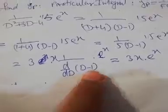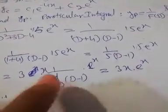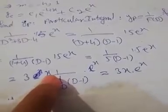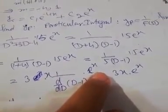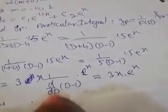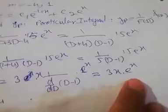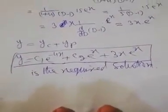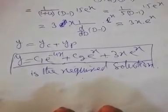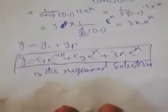Using the formula: x times 1/[d/dD(D - 1)] times e^x divided by 5, and since the derivative of (D - 1) is 1, this simplifies to 3x·e^x. Hence the complete solution is y equals c1·e^(-4x) plus c2·e^x plus 3x·e^x.